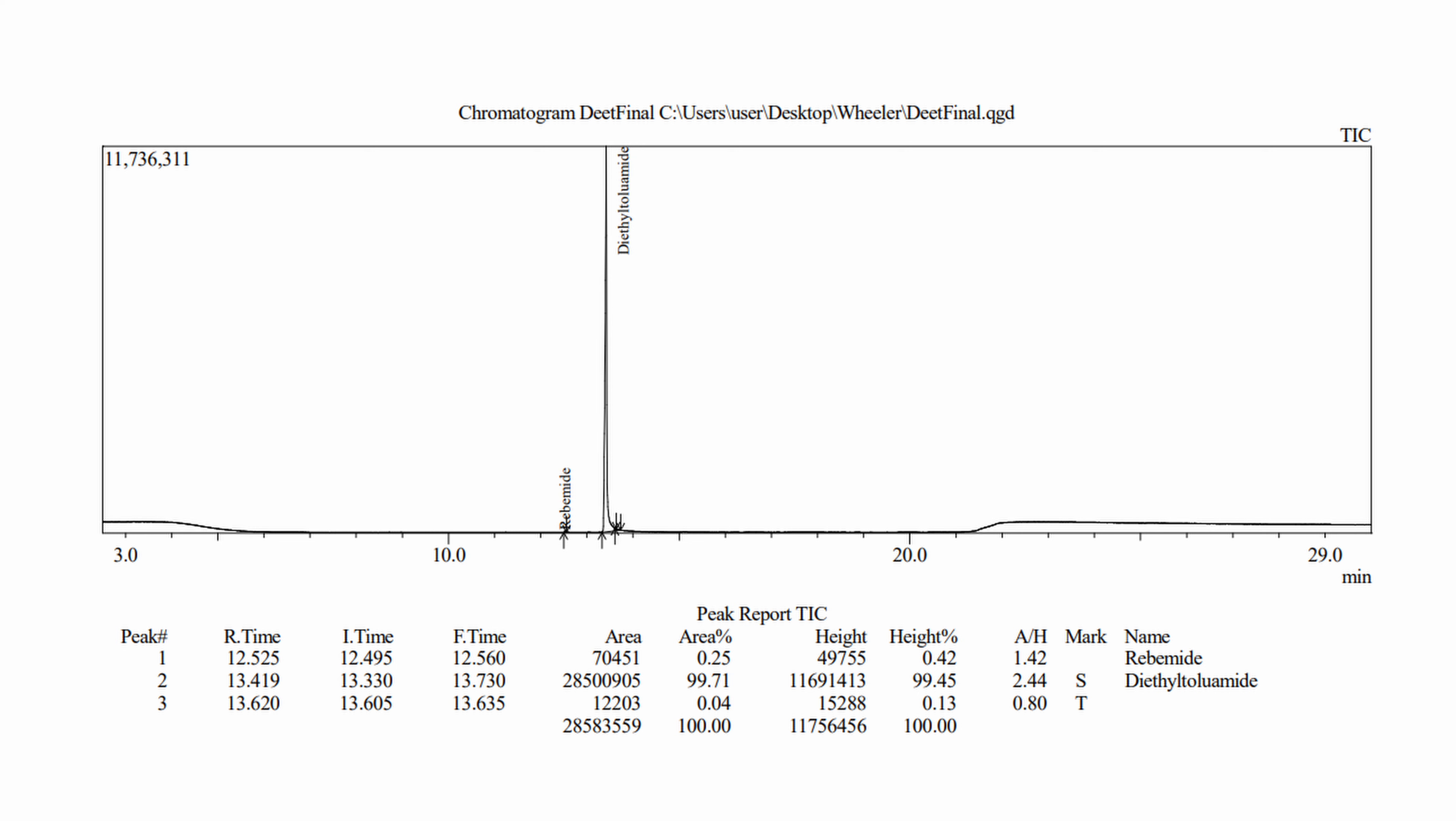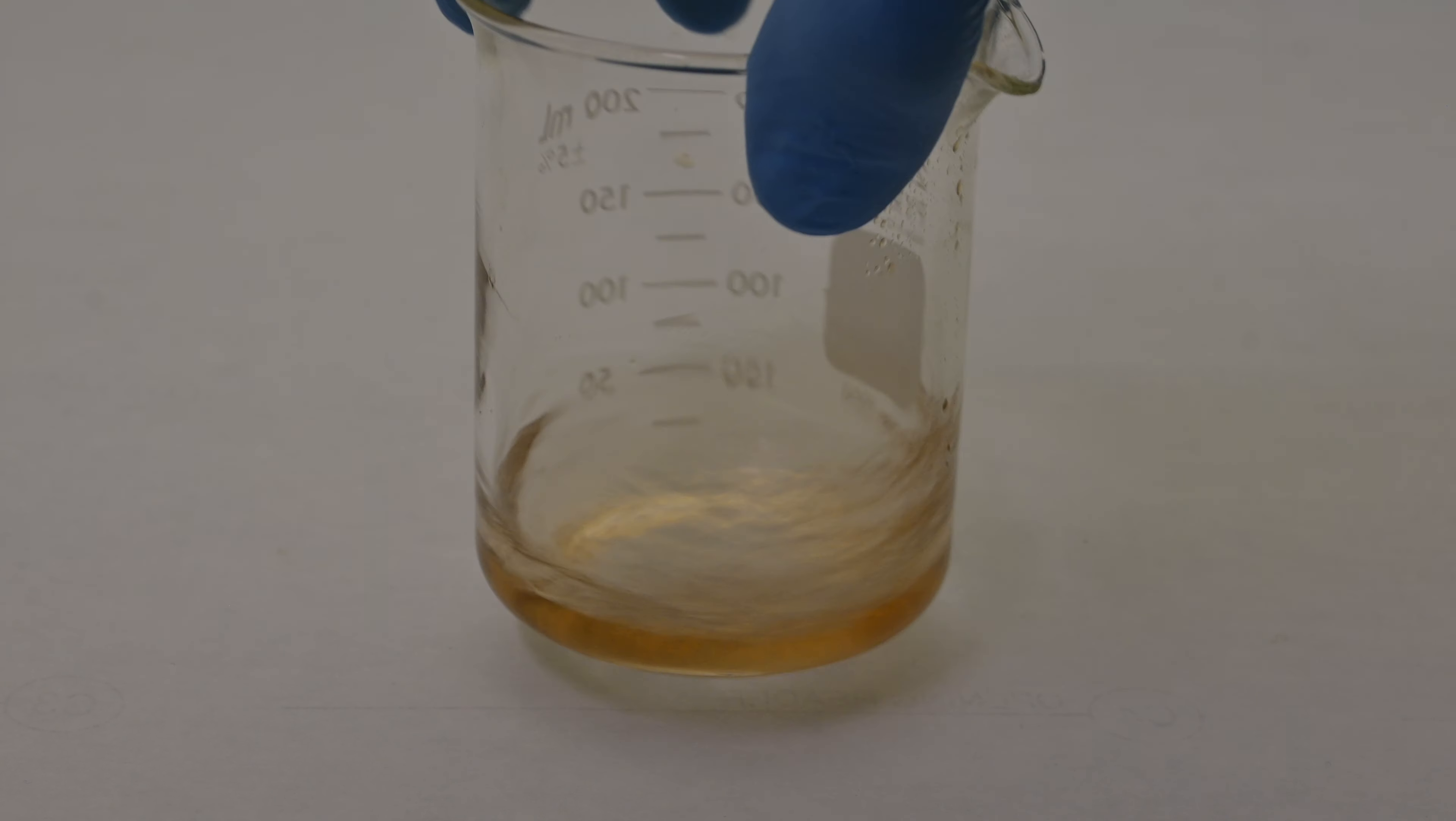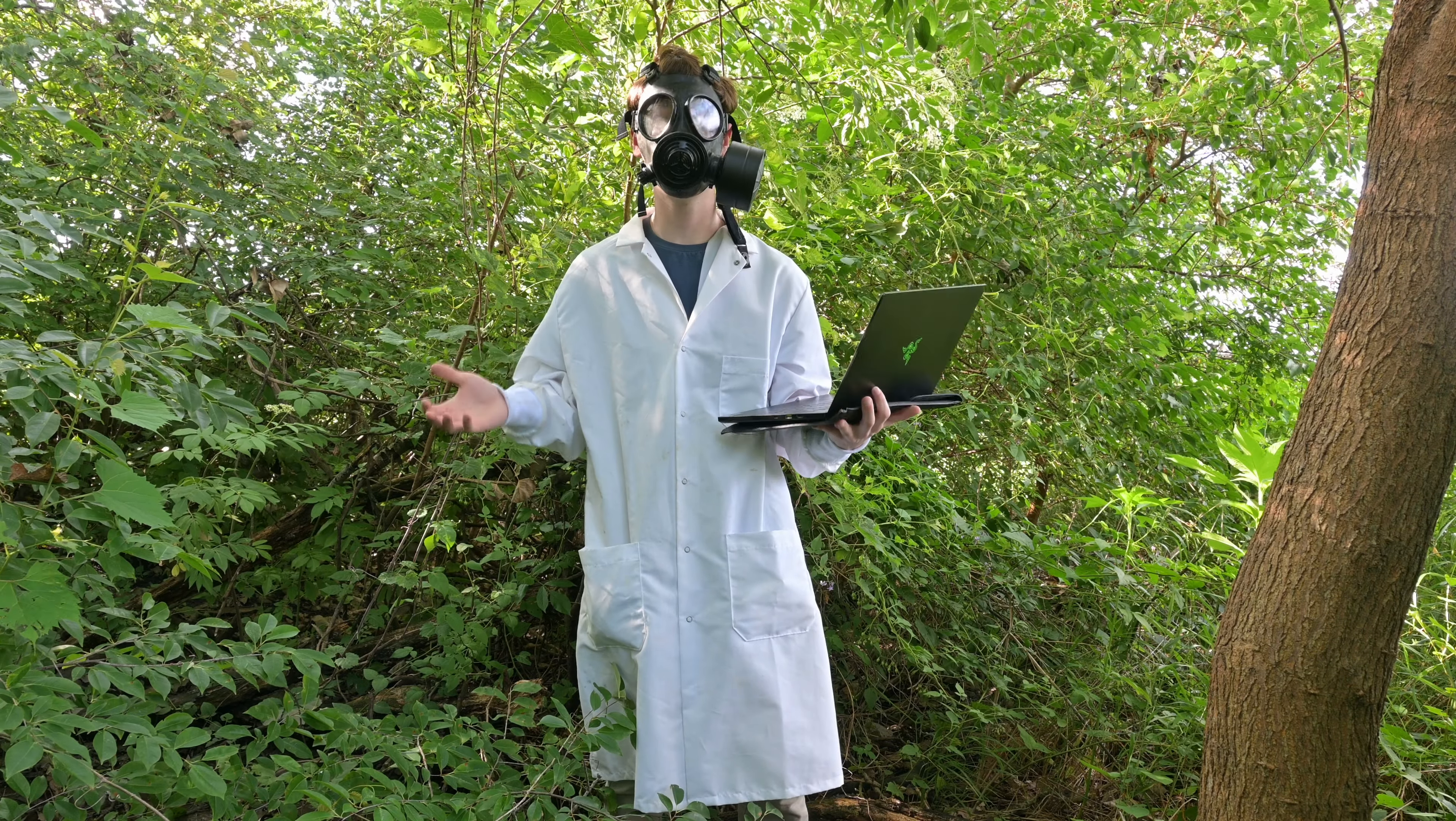Based on this data, we have successfully produced DEET, and at high purity, almost 99.9%. We can now take our final product, dissolve it in some alcohol, and we have successfully made some bug spray. Apply this to a rag, and you're ready for outdoor activities. Welcome to Wheeler Scientific, and thanks for watching.